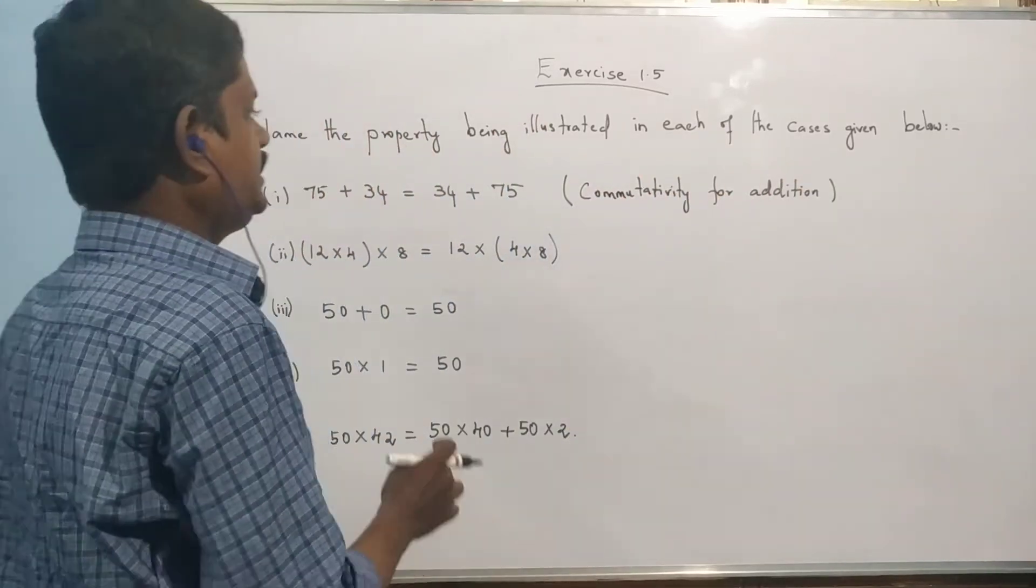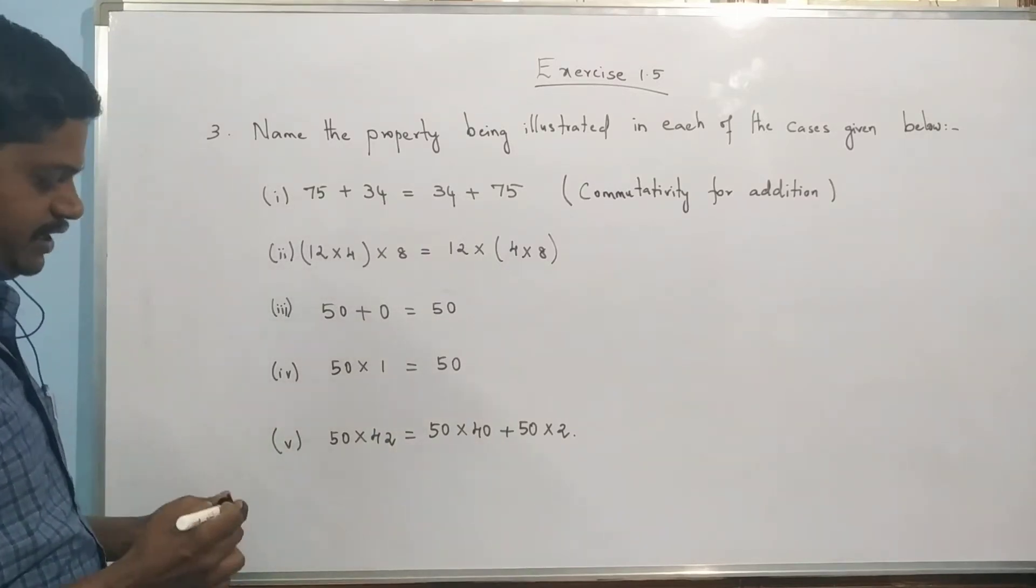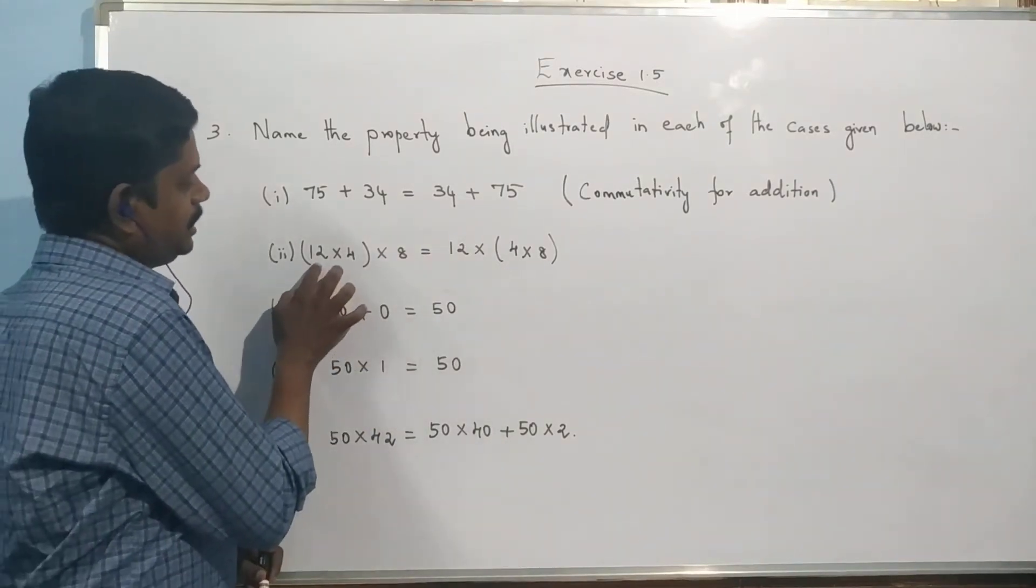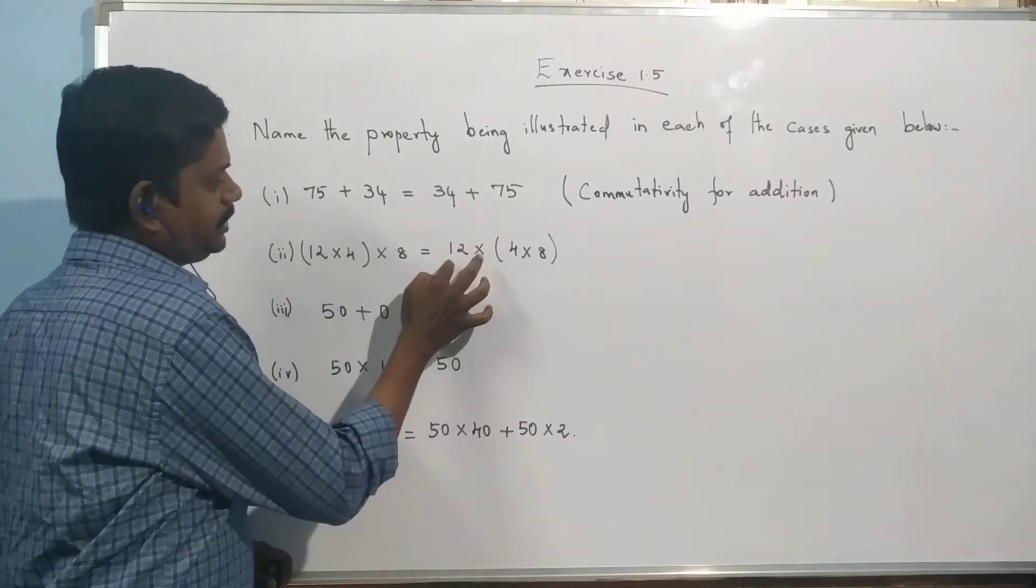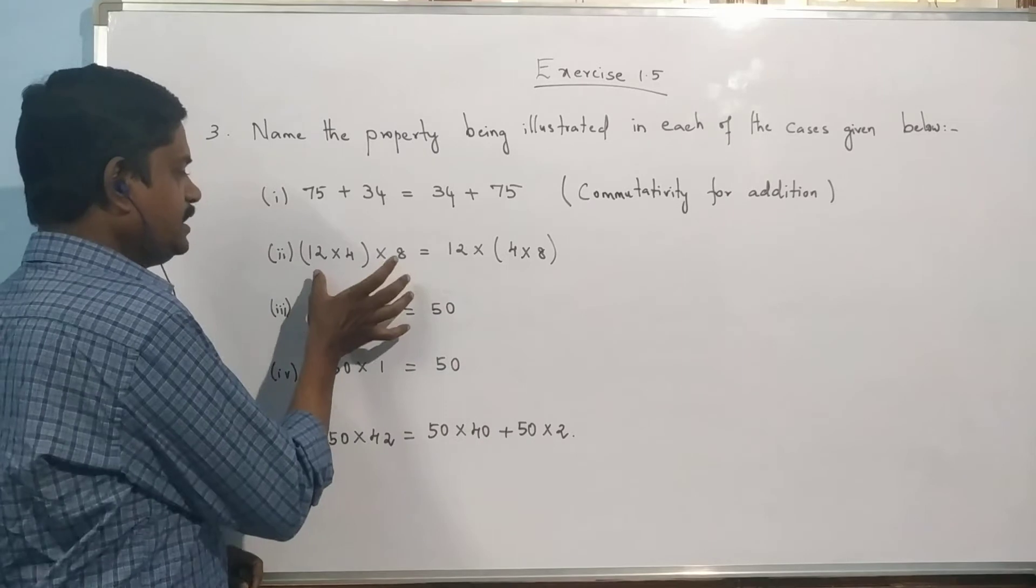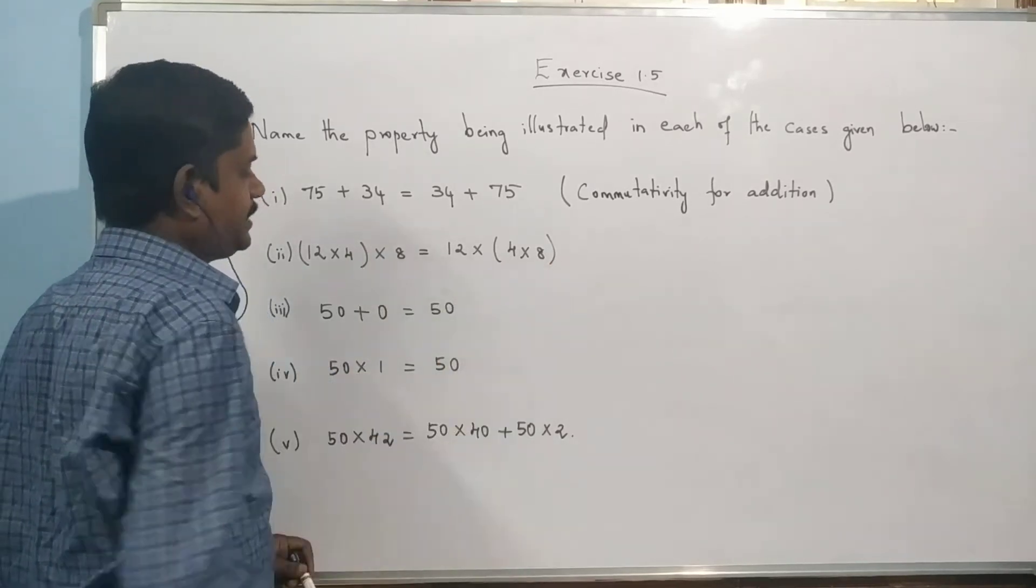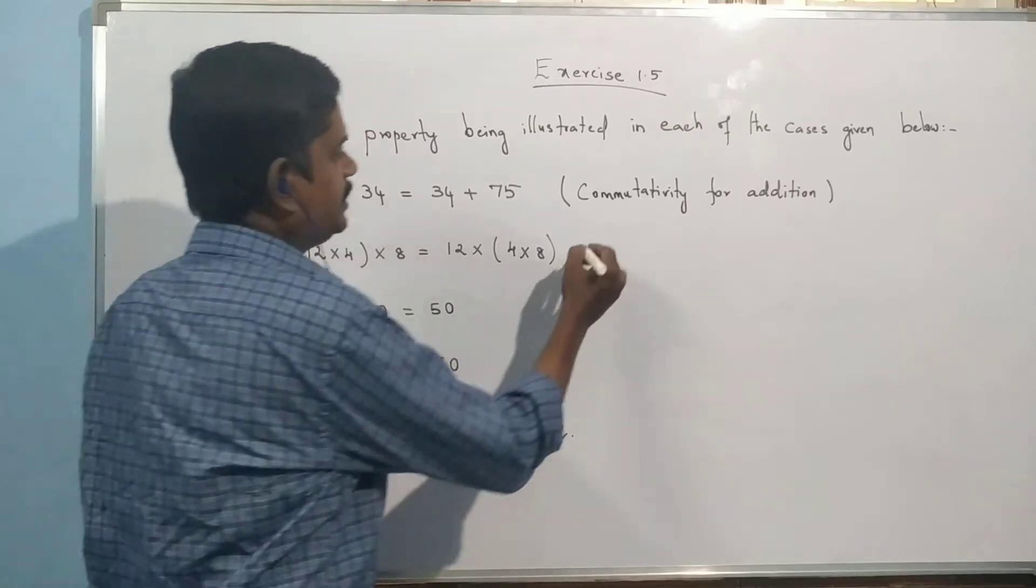This symbol is multiplication, but plus is addition. Next, 12 into 4 into 8 equal to 12 into 4 into 8. The three numbers stay the same, but the bracket changes - first two numbers bracketed, then second and third bracketed. So that is associativity.